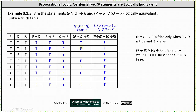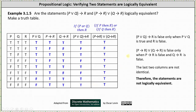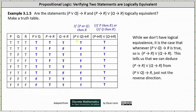From here we can easily see the last two columns are not identical, and therefore the two statements are not logically equivalent. However, there is something we can take from this truth table: while we don't have logical equivalence, whenever if p or q then r is true — in rows one, three, five, seven, and eight — so is if p then r or if q then r. This tells us we can deduce that if p then r or if q then r from if p or q then r, just not in the reverse direction.